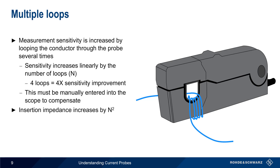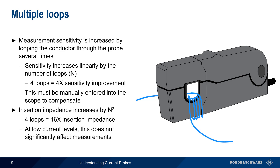These loops also increase the insertion impedance by the square of the number of loops — so four loops would increase the insertion impedance by a factor of 16. However, this increased insertion impedance is usually quite small and does not significantly affect measurements at low current levels.